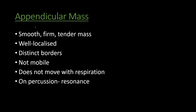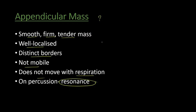One of the important differential diagnoses is appendicular mass. It is usually smooth, firm, and tender — well localized with distinct borders and not mobile; it does not move with respiration. On percussion it is resonant. For treatment, we cannot perform appendicectomy in appendicular mass. We need to follow the Ochsner-Sherren regimen, monitor the patient, and perform interval appendicectomy after 6 weeks.